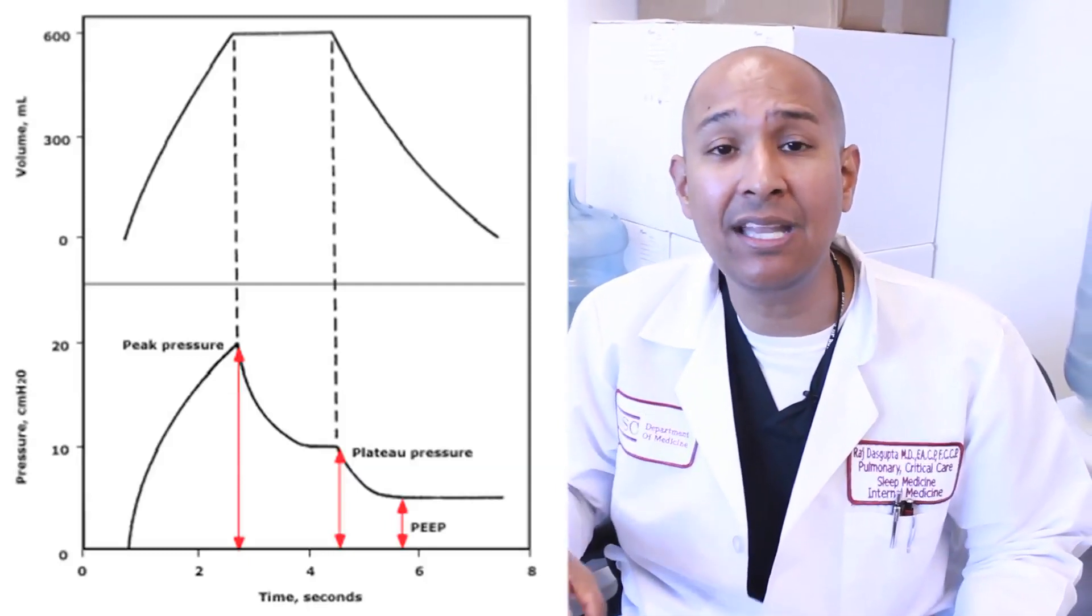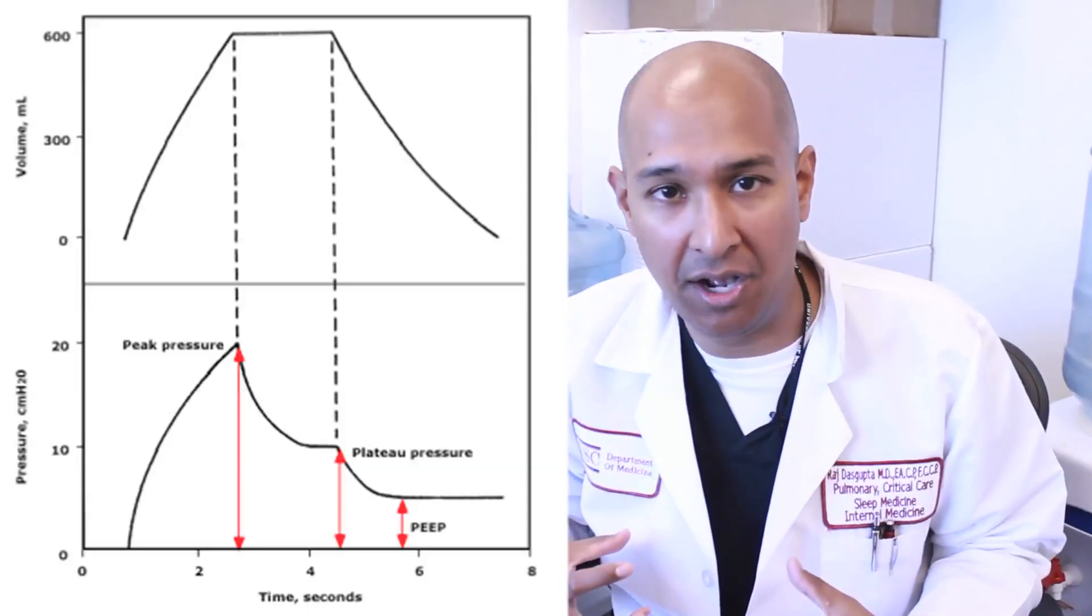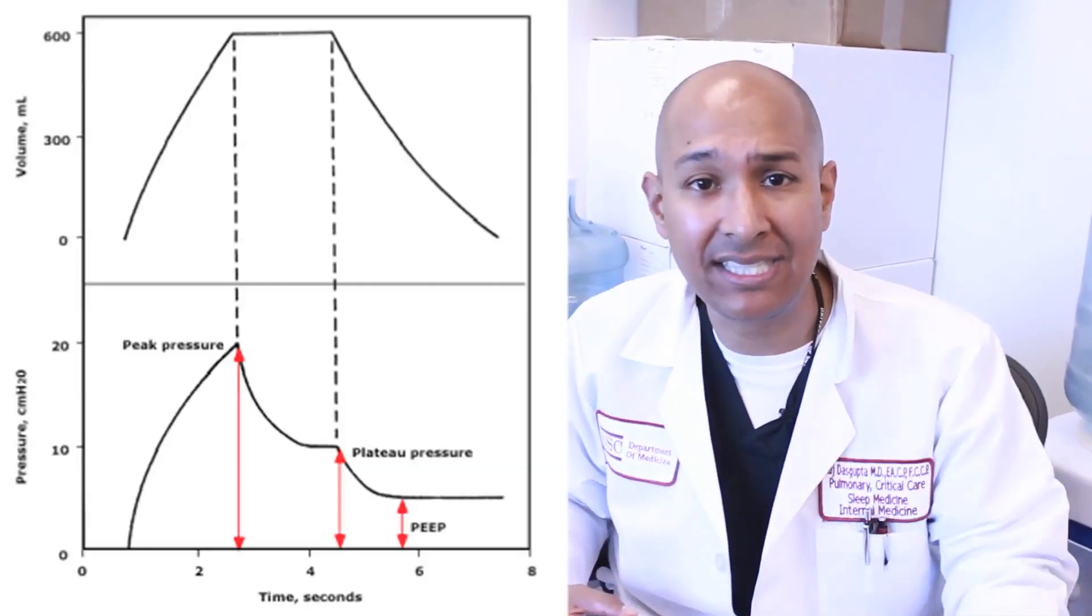This is going to be the pressure required to get a volume of air into the lungs. It represents resistance in the main airways. Why is that?